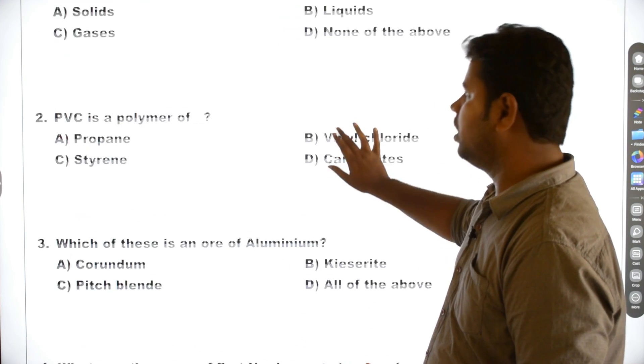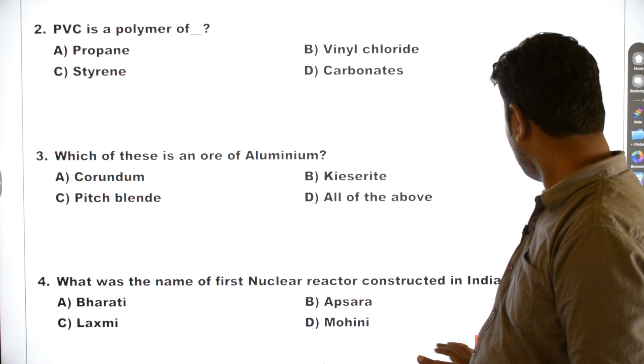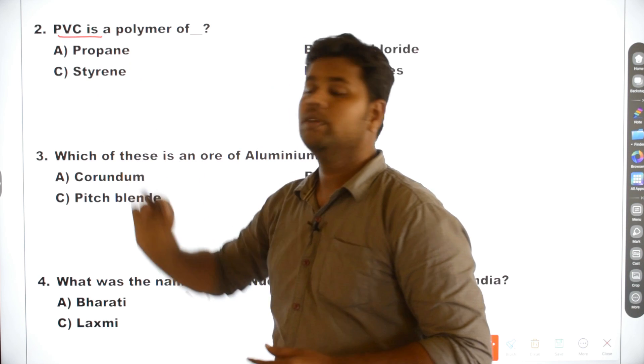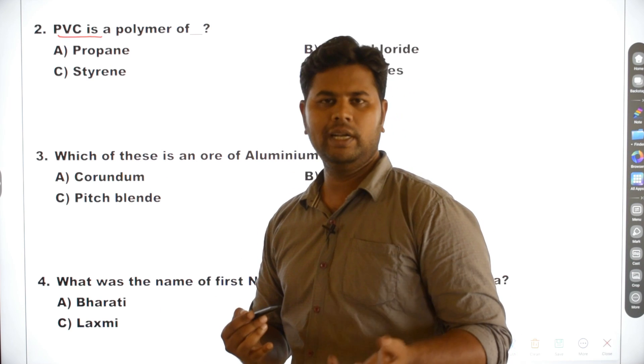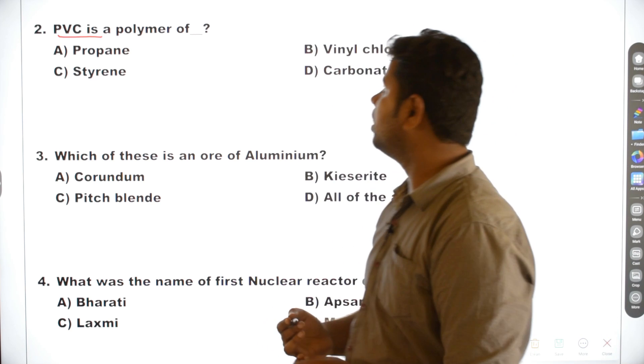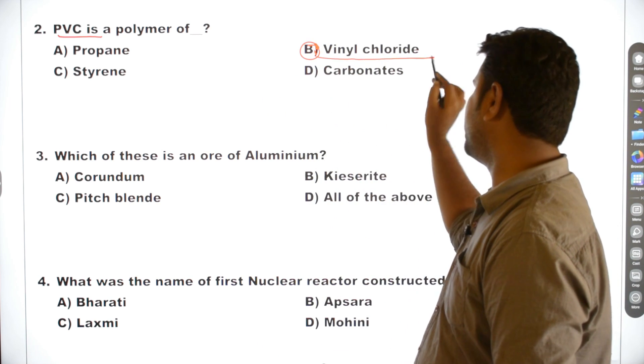Second question. PVC is a polymer of? Polyvinyl chloride. This is a polymer of building, transport, healthcare applications. PVC polymer of? B, Vinyl chloride.